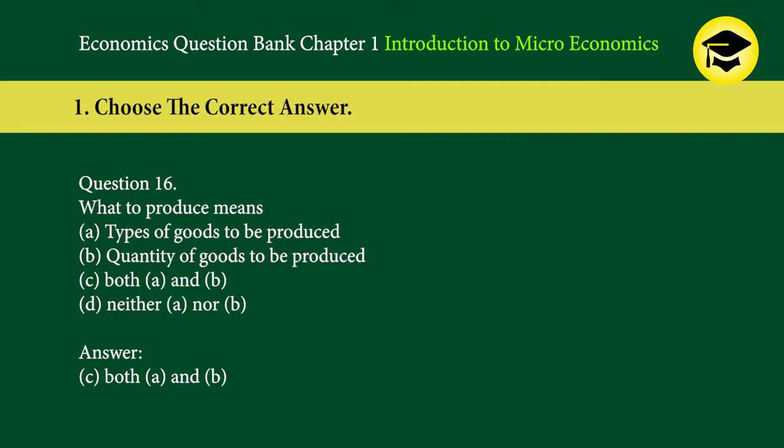Question 16: What to produce means — A. types of goods to be produced, B. quantity of goods to be produced, C. both A and B, D. neither A nor B. Answer: C. Both A and B.